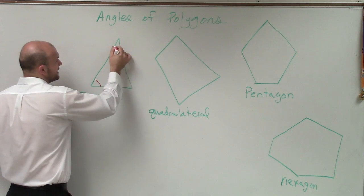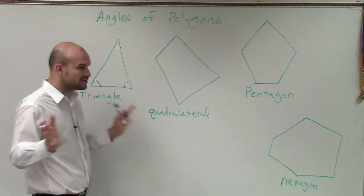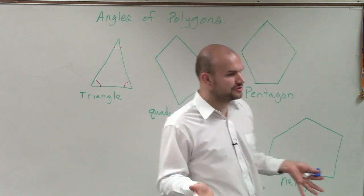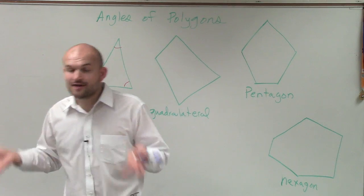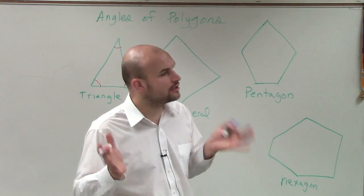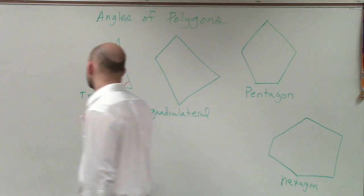All the angles in a triangle, no matter what the shape of the triangle is, it doesn't matter if it's an obtuse triangle, a right triangle, or an acute triangle, all the angles inside a triangle are always going to add up to 180 degrees.